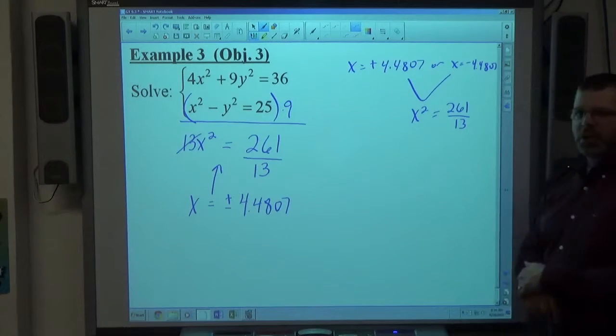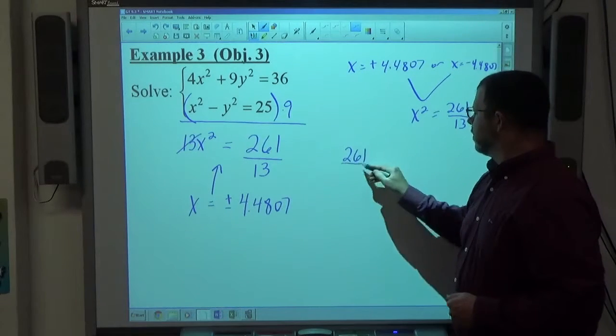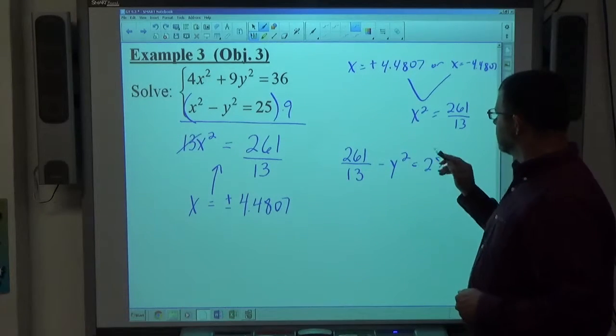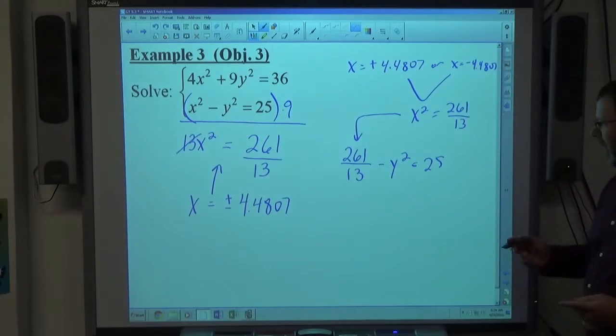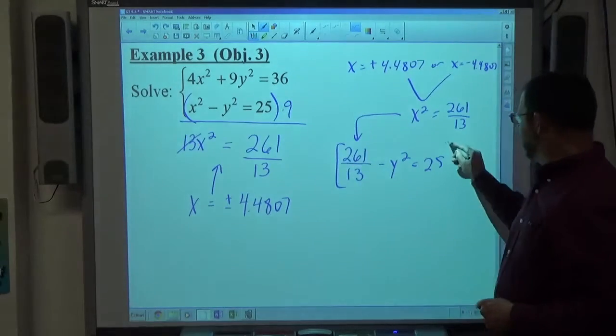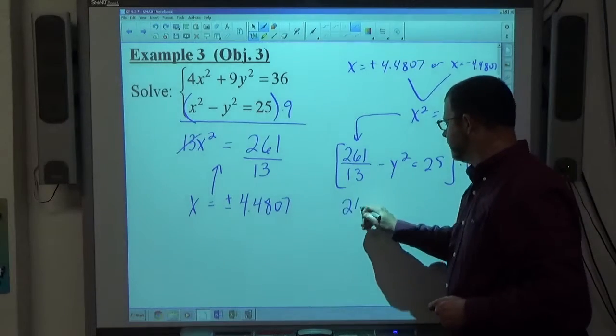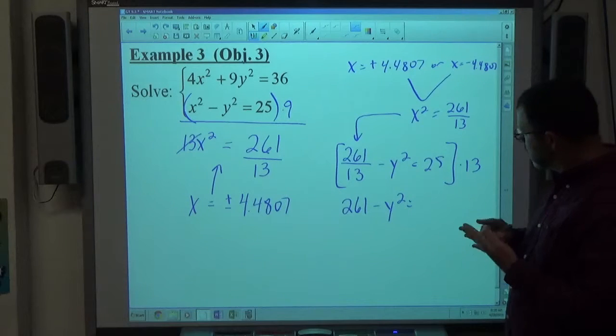I'm going to go to the bottom equation. x squared minus y squared equals 25. So 261 over 13 minus y squared equals 25. Just replacing x squared with what it is based on what x is. I'd probably multiply by 13 to get rid of the fractions.